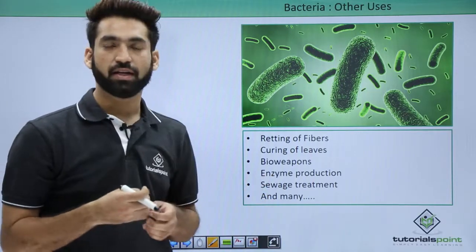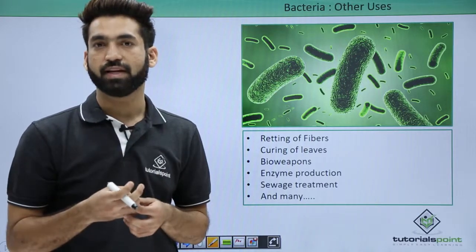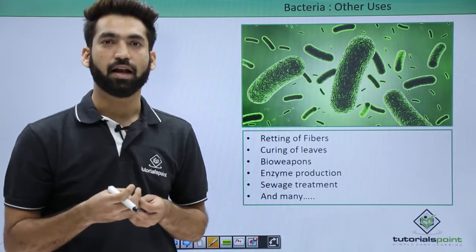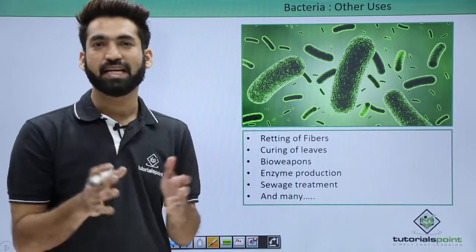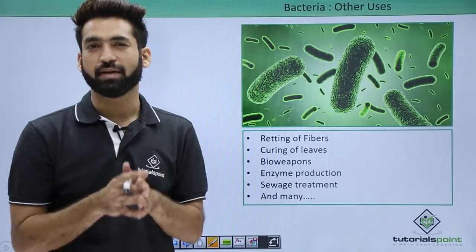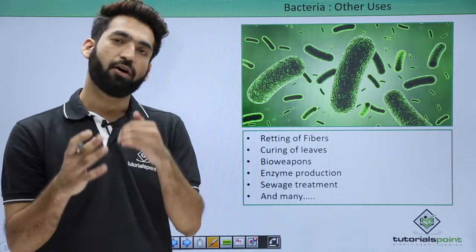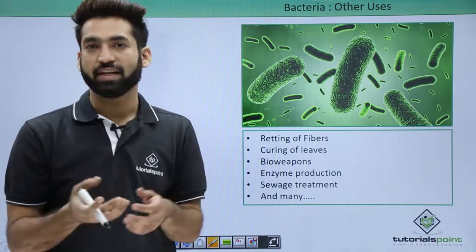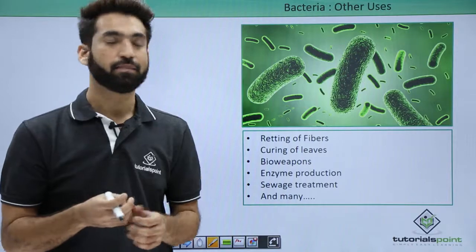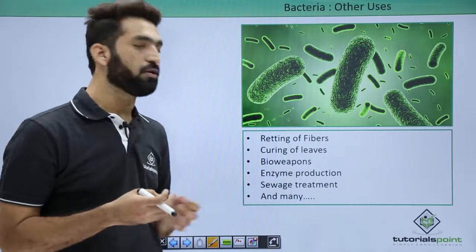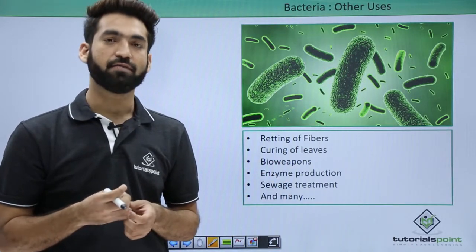You have enzyme production — for the citric acid cycle, most of the enzymes required can come from bacteria. You also have sewage treatment. In wastewater treatment and solid municipal waste treatment, saprophytic bacteria decompose the litter, so bacteria are also very useful for sewage treatment.